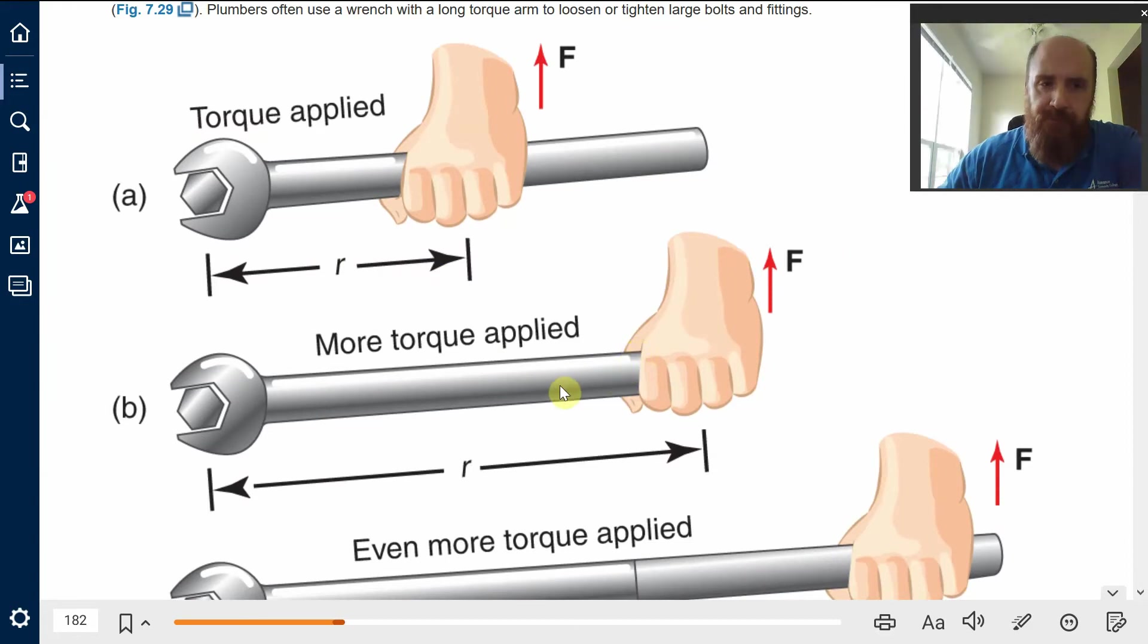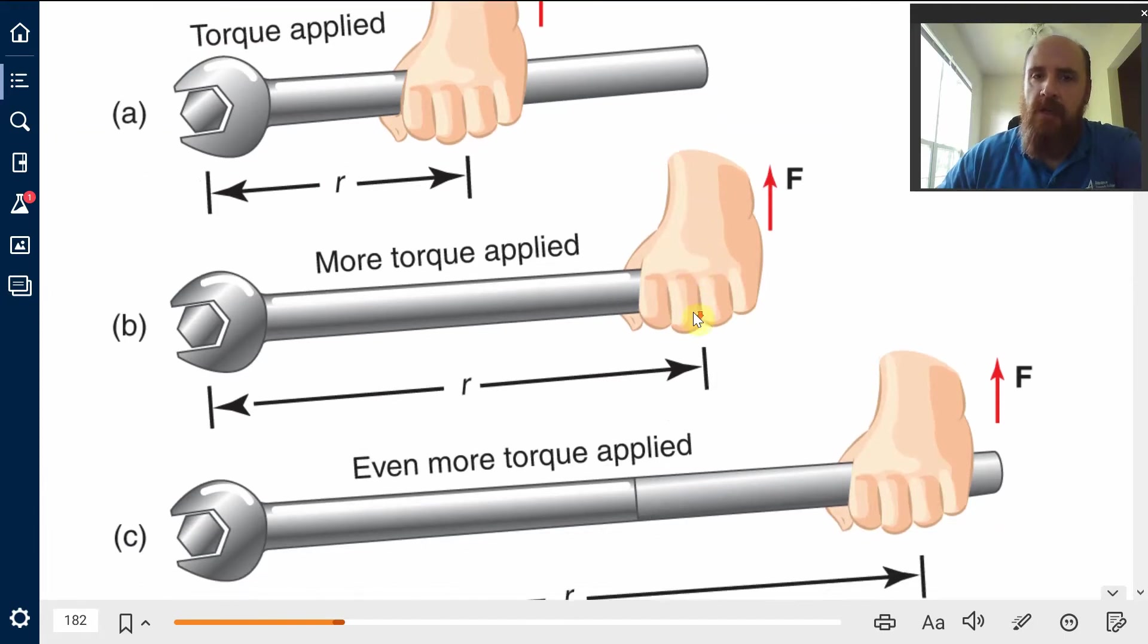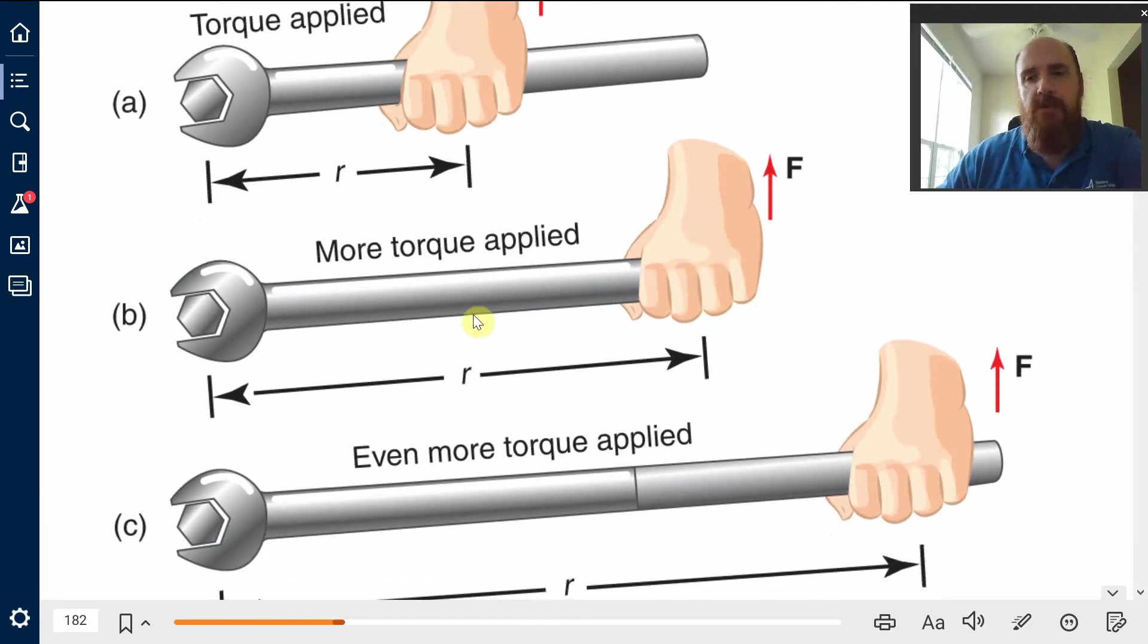We grip the end of the long-handled wrench. The torque increases even if we're not actually increasing the force. In all of these cases, we're using the same force, but we increase what's called the torque arm, the lever arm. And the result is more torque, more turning force, even though you're not actually applying more force.